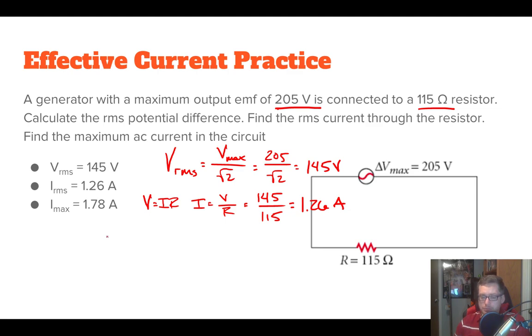Pretty easy stuff, right? And then last one asks us to find the I_max, the current, the maximum current. Well, we know that the I_RMS is equal to the I_max divided by the square root of two. So that means the maximum current is equal to the square root of two times the I_RMS. And if you multiply root two times 1.26, you get 1.78 amps.